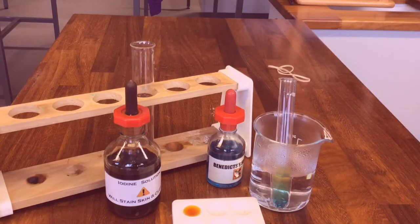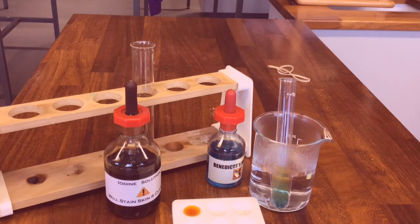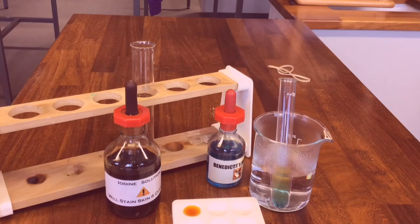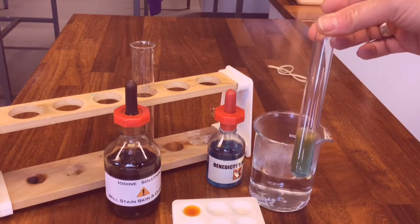For this model gut experiment we can say that the starch has not passed through the gut wall or the visking tubing because it is too big, whereas the sugar molecules were able to pass across the gut wall because the Benedict's has changed from blue and it's starting to go orange at the top.